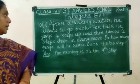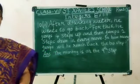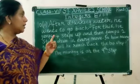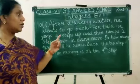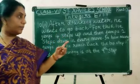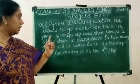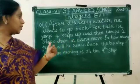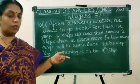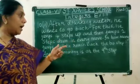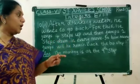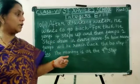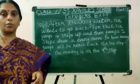Question number 10, second part. After drinking water, he wants to go back. For this, he jumps 4 steps up and then jumps 2 steps down in every move. In how many jumps will he reach back to the top step?